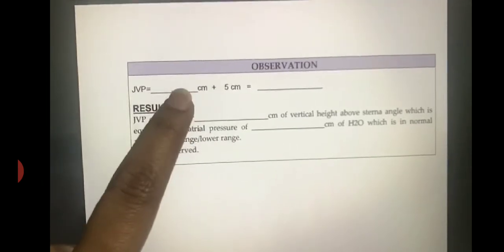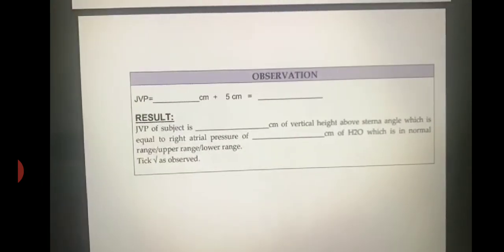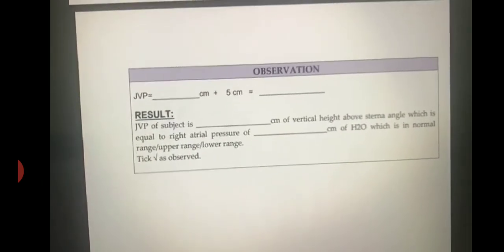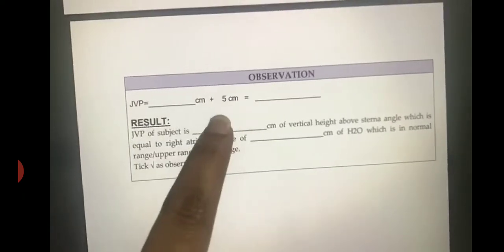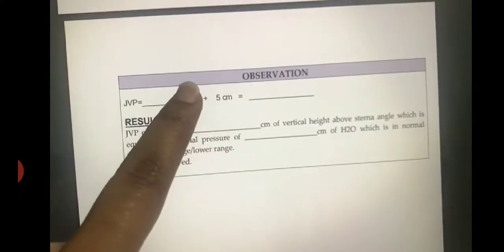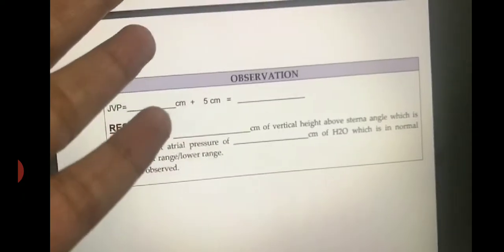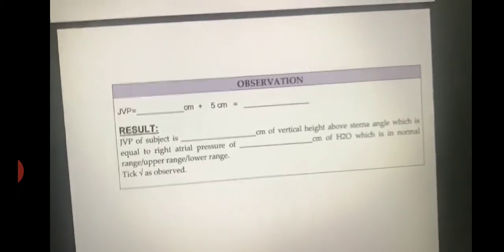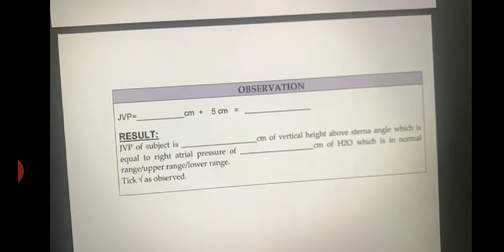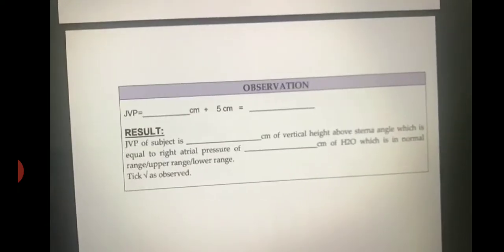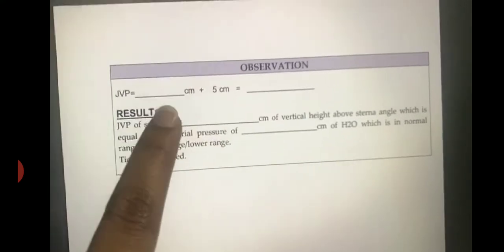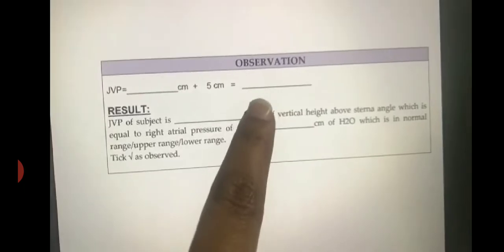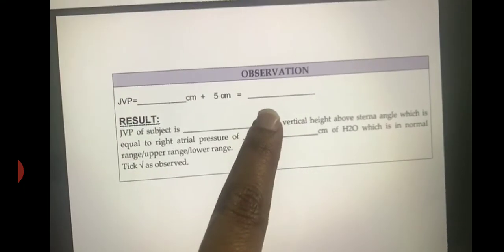Now, why do we add this five centimeters? As already mentioned in your copy, five centimeters is our landmark, the sternal angle. The atrium is five centimeters below the sternal angle. That's why we have to add this five centimeters. Two centimeters plus five centimeters makes seven centimeters of water, which is within the normal range.